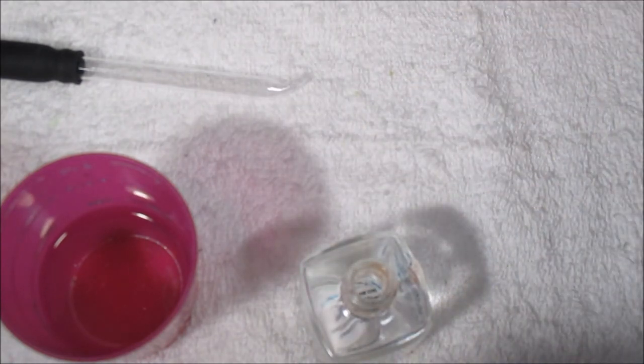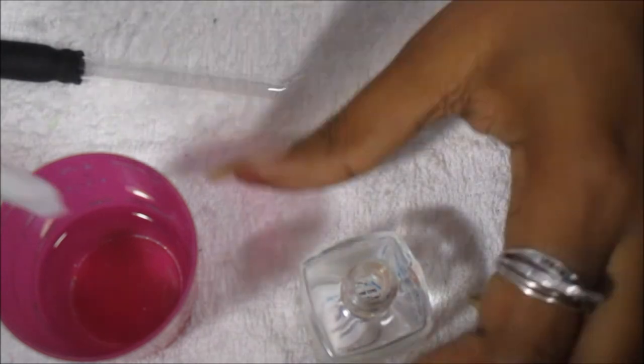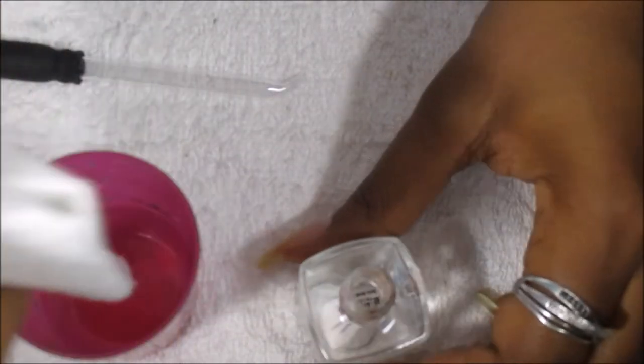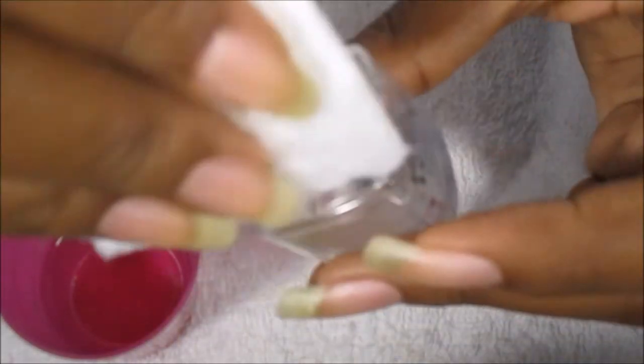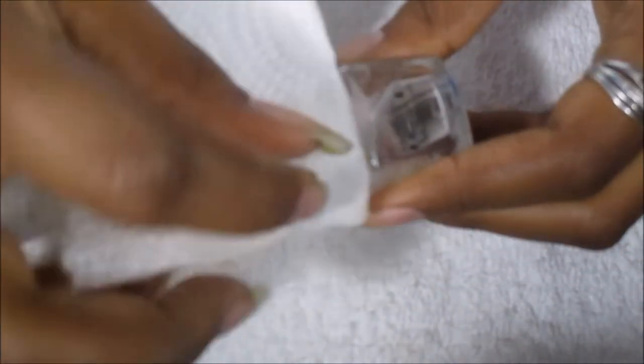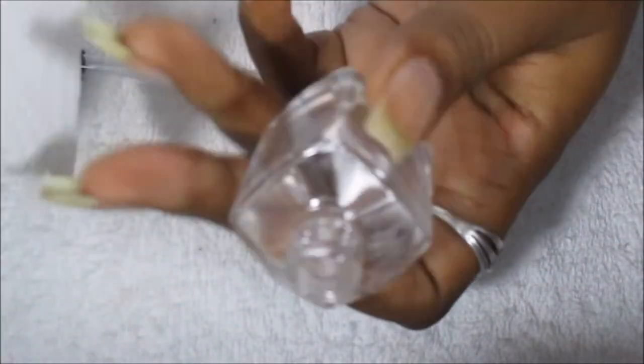I take a paper towel and dip it in my acetone and clean the neck of the bottle. Just wrap it around and just twist it.